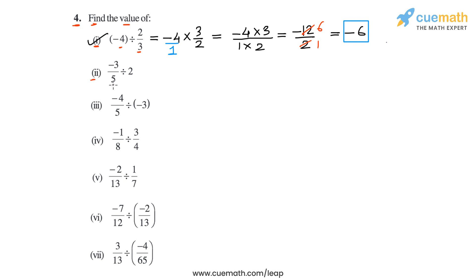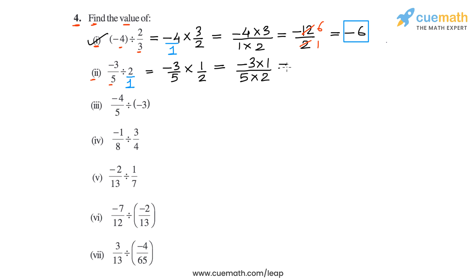In part 2, we have to calculate minus 3/5 divided by 2. We think of 2 as the rational number 2/1. So we write this as minus 3/5 multiplied by the reciprocal of 2/1, which is 1/2. Multiplying the numerators gives minus 3 into 1, and the denominators gives 5 into 2, resulting in minus 3/10. So in part 2, the value of the expression is minus 3/10.